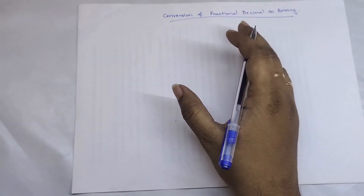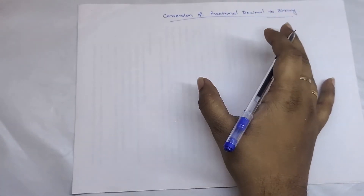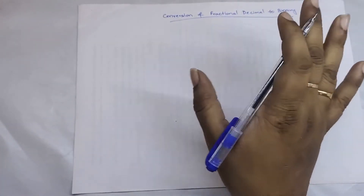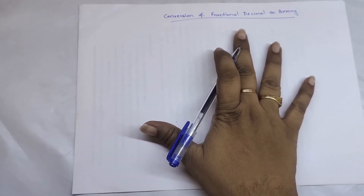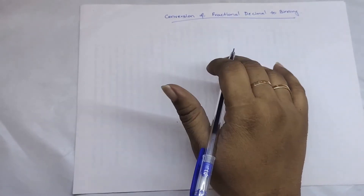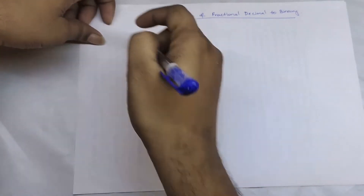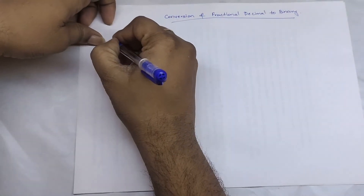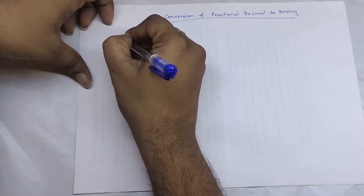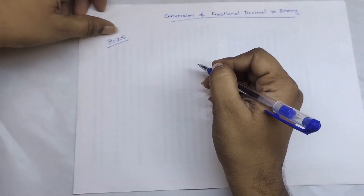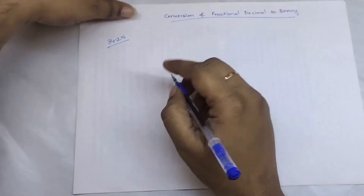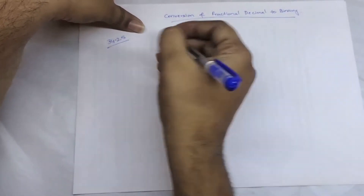Everything is fine if there is no fractional part — it is very simple to convert a normal decimal value to binary. But the question is: what do we have to do if the given number is a fractional decimal? For example, if it is 34.25, what is the binary conversion of that decimal?